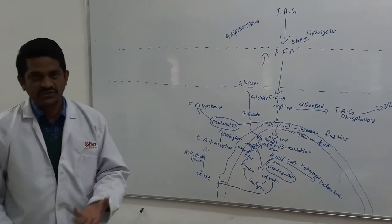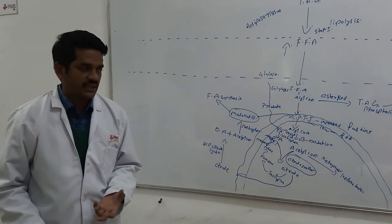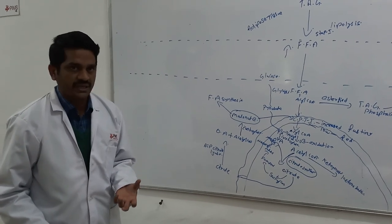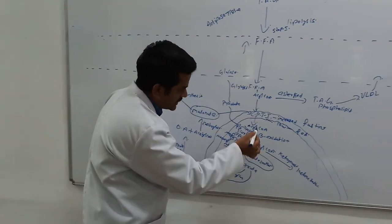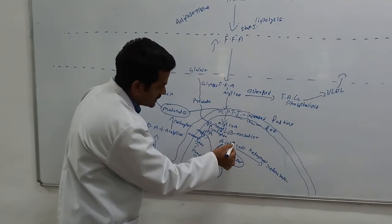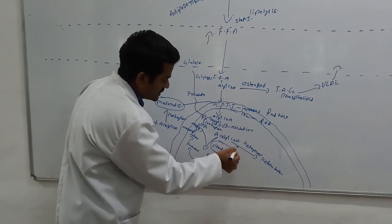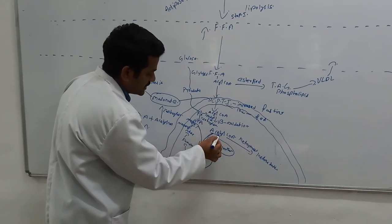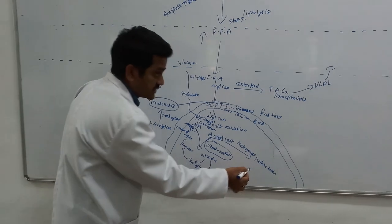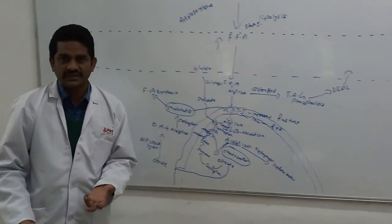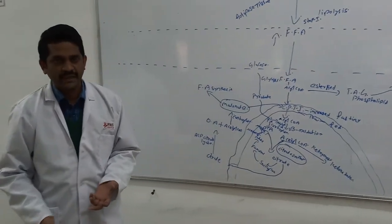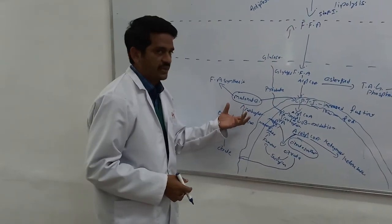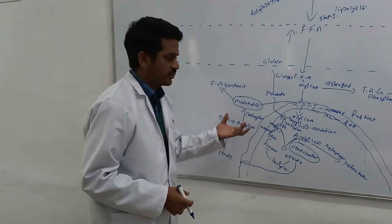Malonyl-CoA in the fed state is going to inhibit carnitine palmitoyltransferase-1 (CPT-1). In the fed state, malonyl-CoA is a potent inhibitor of CPT-1. So, beta-oxidation cannot take place; and if beta-oxidation is not there, acetyl-CoA is not formed and ketogenesis will not take place.